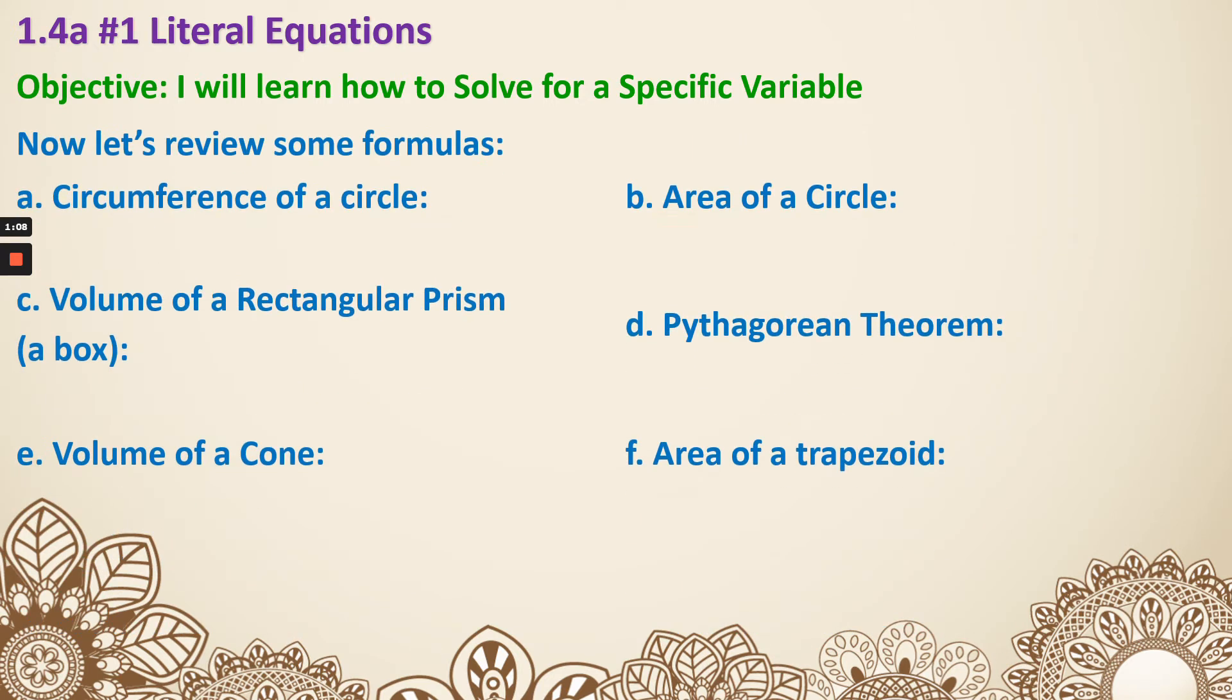So now let's review some formulas. First, circumference of a circle and area of a circle. They will both involve pi and r. Circumference of a circle is C = 2πr. Area of a circle is A = πr².